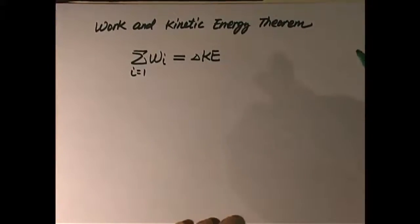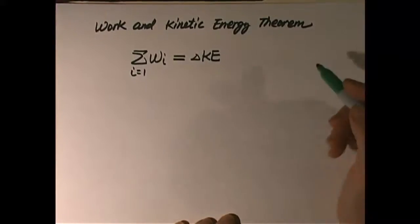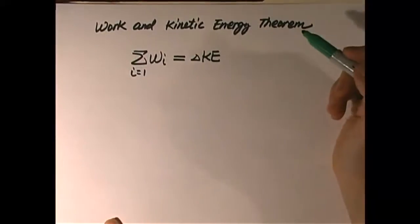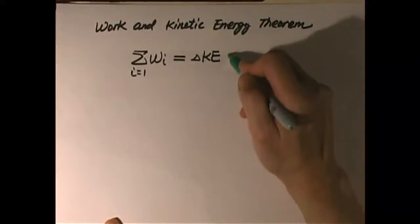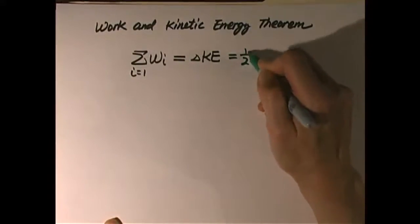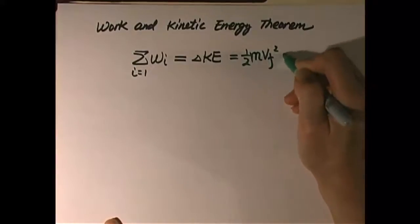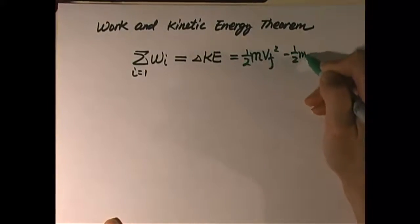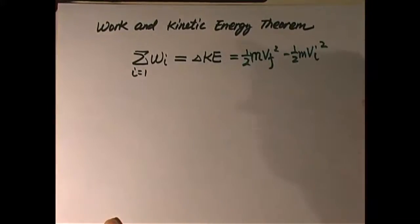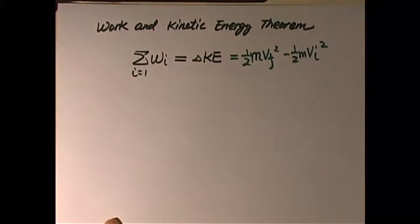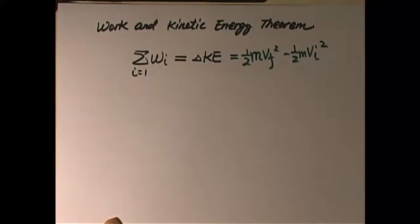We learned the work-energy theorem: the total work done on an object equals the change of kinetic energy, which is one-half m v-final squared minus one-half m v-initial squared. If we count every single force, only two of them are conservative forces — one is gravity and one is elastic force.